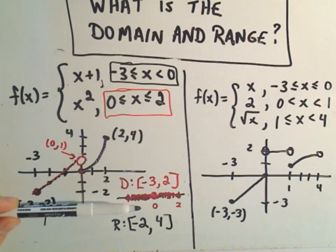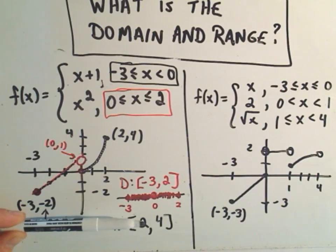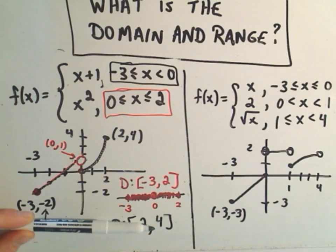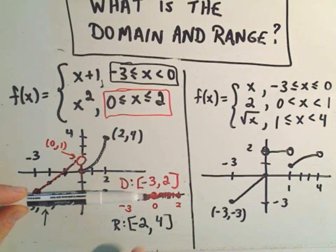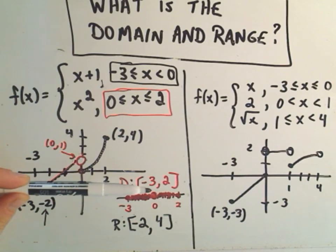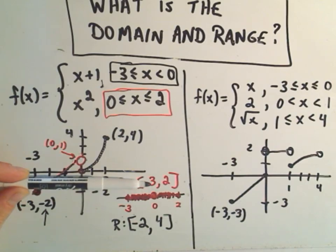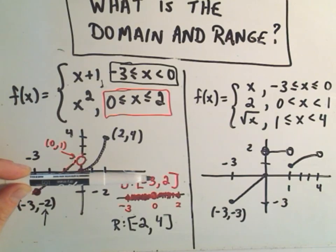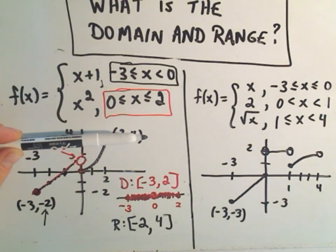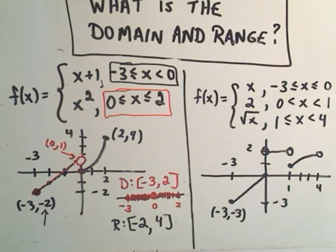Sometimes I say maybe imagine your pen — move it horizontally and think what's the smallest y-coordinate I hit. Well, in this case it would be negative 2. I'm still hitting a y-coordinate somewhere, so I'm hitting everything. I'm hitting negative 1, I'm hitting 0, I'm hitting 1, I'm hitting 2, I'm hitting 3, up to and including the value of 4. So that would be the range in that case.